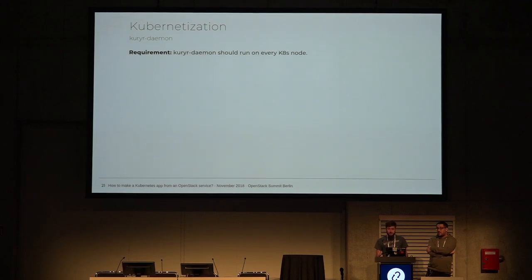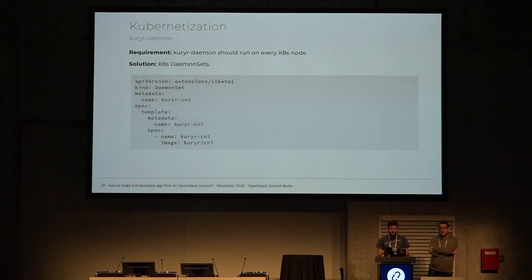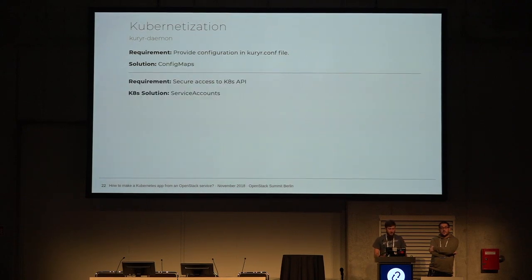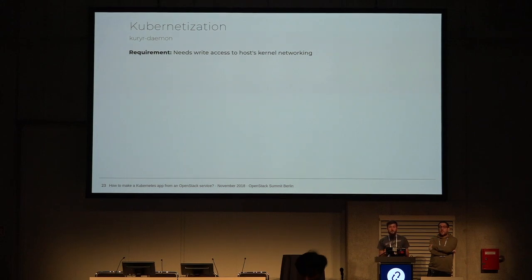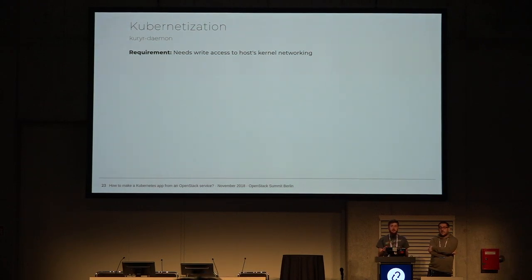Now going through the Kuryr Daemon service - it's a bit different. We want it running on every Kubernetes node. There's a different Kubernetes primitive called DaemonSet that solves this - very similar to the deployment definition, but we don't specify the replicas number because the DaemonSet ensures the service runs on every node. Kuryr Daemon performs all the networking operations - creating virtual ports on the host and plugging them into the namespaces of pods being created on that node. So it needs full access to the kernel networking system.